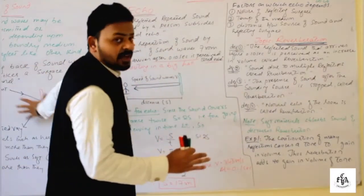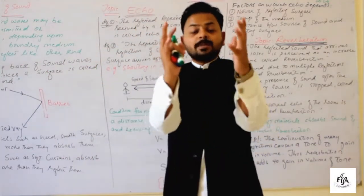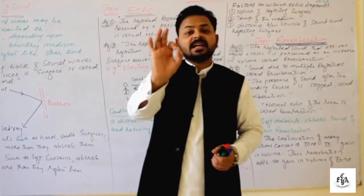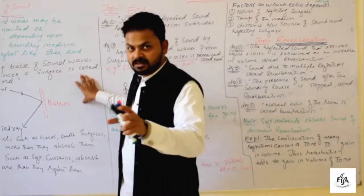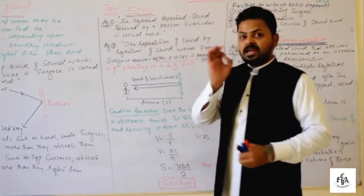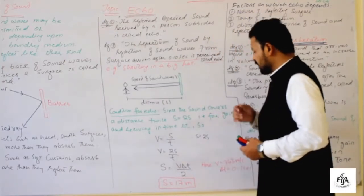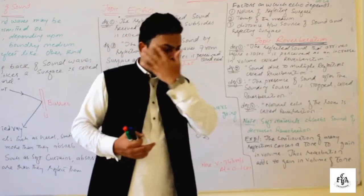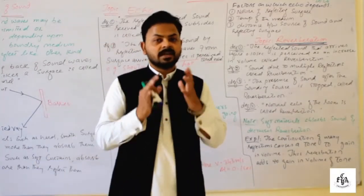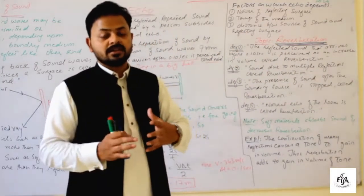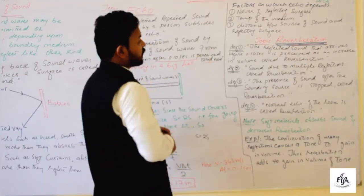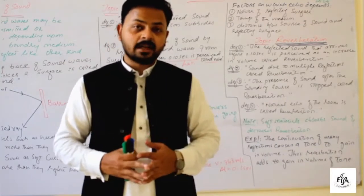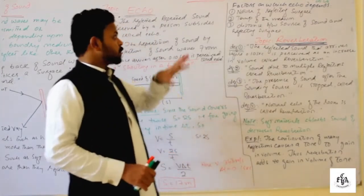For reflection of sound, there is no necessary hard and fast rule that it must cover 17 meters. But for echo, we must have a distance of 17 meters — that is the basic condition for echo. There are some factors upon which echo depends: the nature of the reflecting surface (whether soft, hard, or intermediate), the temperature of the medium, and the distance between the source of sound and the reflecting surface.